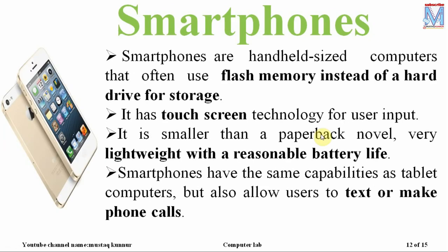Smartphones are nowadays an inseparable part of our life. They are handheld devices that use flash memory instead of a hard drive — unlike desktops and laptops which use hard drives. Flash memory is also a faster type of memory compared to hard drives. Smartphones use a touchscreen as an input device and process information using a processor, displaying results on the touchscreen.